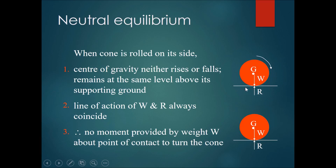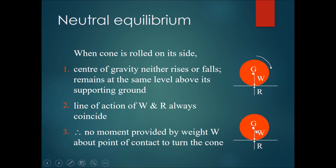When the cone is rolled on its side, the center of gravity neither rises nor falls — it remains at the same level above its supporting ground. When it rolls to a new position, the weight is directly above the pivot. There is no perpendicular distance from the weight to the pivot, because the weight just pushes directly down through the pivot. Therefore, there is no turning effect — no moment provided by weight W about the point of contact to turn the cone. Therefore, the object will not continue rolling and will not roll back.